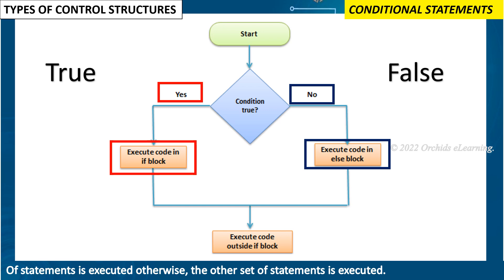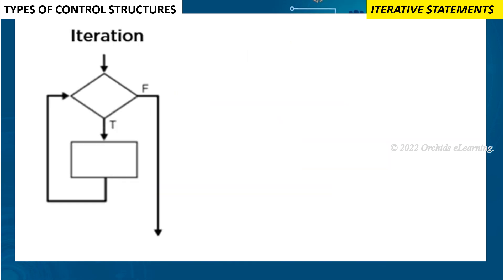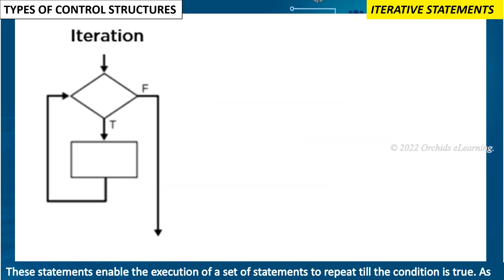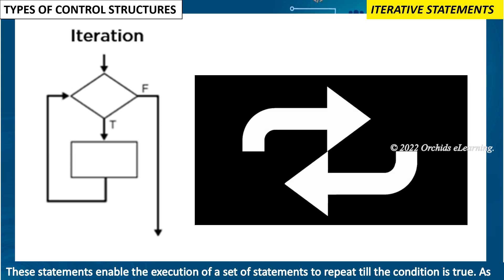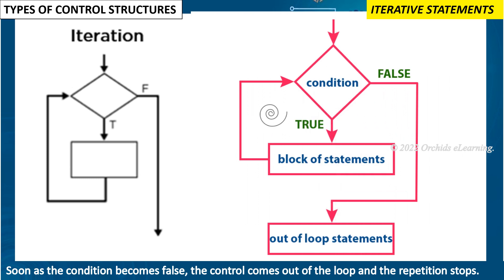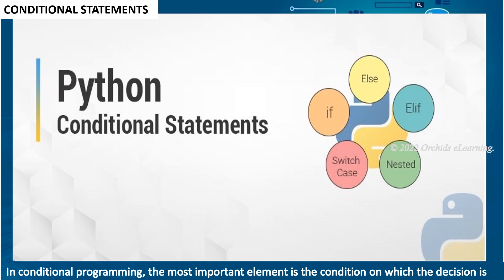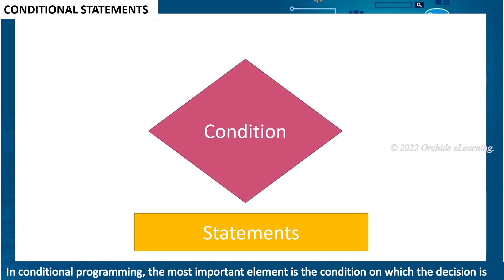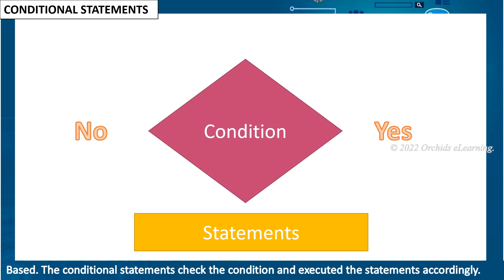Iterative statements enable the execution of a set of statements to repeat until the condition is true. As soon as the condition becomes false, the control comes out of the loop and the repetition stops. In conditional programming, the most important element is the condition on which the decision is based. The conditional statements check the condition and execute the statements accordingly.